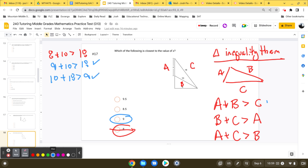Let's do the last inequality. Let's do A plus C is greater than B. So remember, A is 9. So 9 plus C, which is 18. And that's definitely greater than 10. So that one works. So which of the following is closest to the value of X? So that would work.